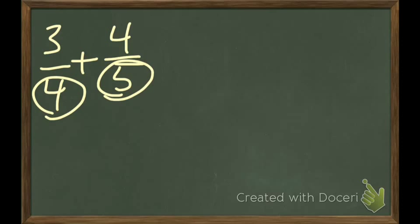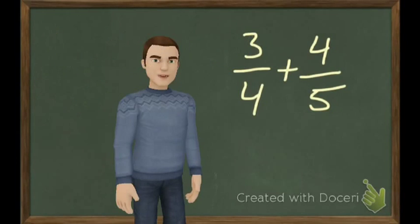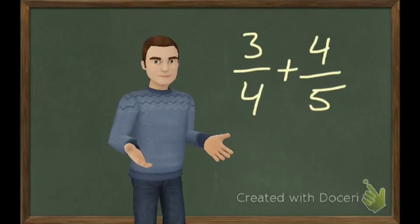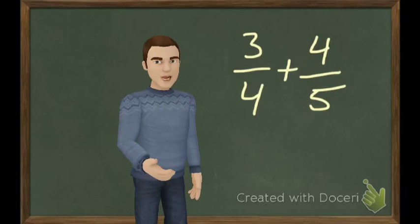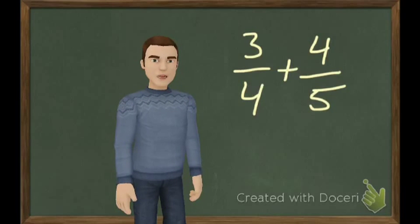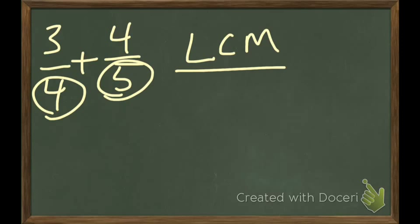is we need to get the four and the five to have the same denominator. And to do that, we have to find what's called the lowest common multiple, LCM. So what's the lowest common multiple between five and four? Since the four and the five are different numbers, I think like multiply five and four, isn't the lowest common multiple 20? That's right, Joey.